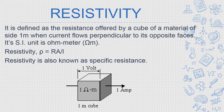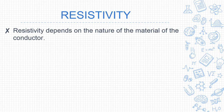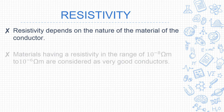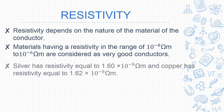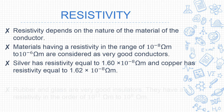Resistivity is also known as specific resistance. Resistivity depends on the nature of the material of the conductor. Materials having a resistivity in the range of 10⁻⁸ ohm meters to 10⁻⁶ ohm meters are considered very good conductors. Silver has resistivity 1.60 × 10⁻⁸ ohm meters; copper has 1.62 × 10⁻⁸ ohm meters.